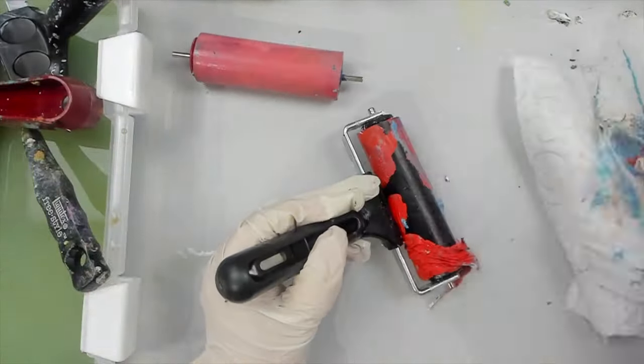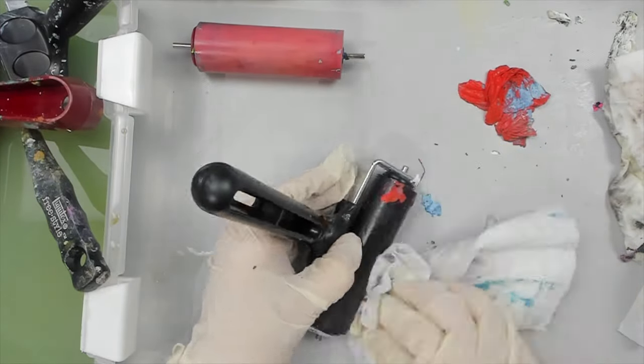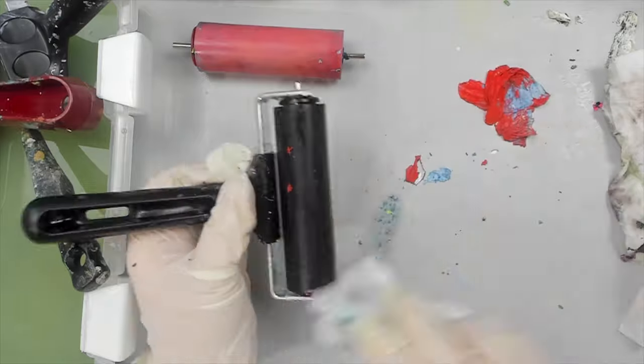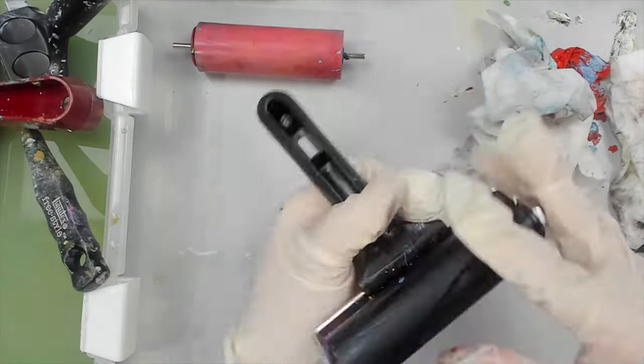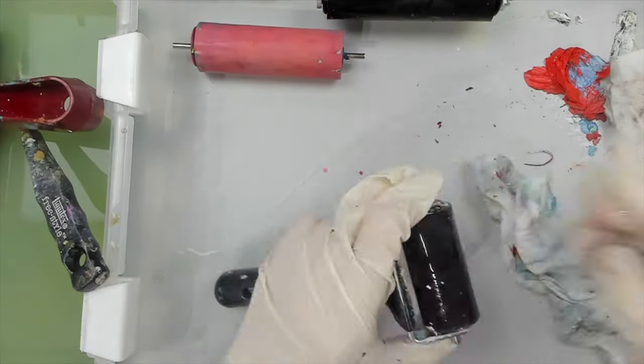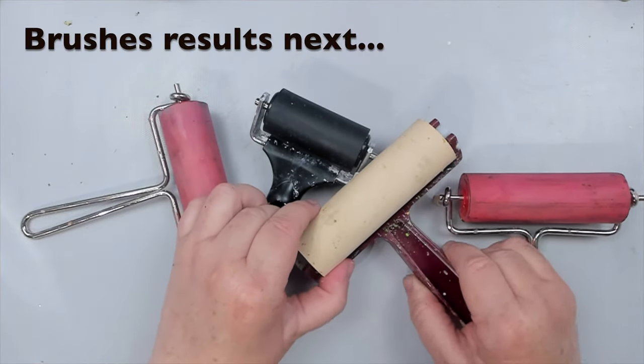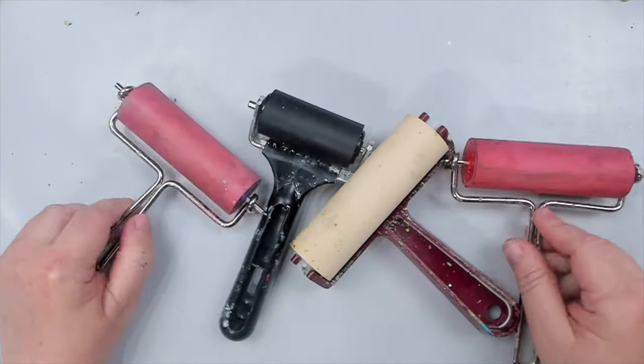I also added a couple of brayers that I had just used with acrylic paint to the bucket and let them soak for a few hours. And the paint literally slid off the surface, which made me think that I need to have a bucket with Murphy's oil sitting on my desk and soak my tool right after I use them. It would solve so many of these problems.